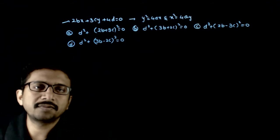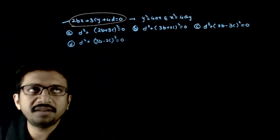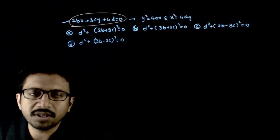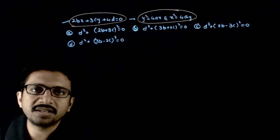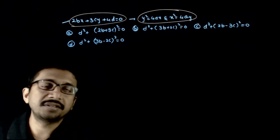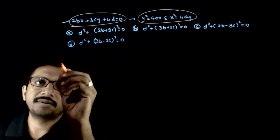Welcome students. In this question, you are given that this line 2bx plus 3cy plus 4d equals 0 passes through the point of intersection of y squared equals 4ax and x squared equals 4ay. If that is so, which of these options are right?